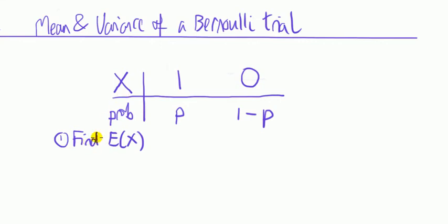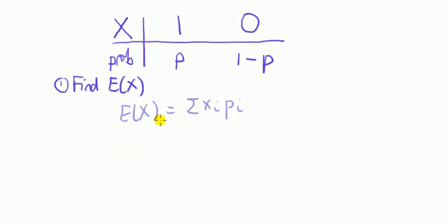First find the mean of X. To find the mean of X is the same as saying find the expected value of X. Now recall the definition of the expected value of X when X is discrete is sum of each outcome times the respective probability. So what we have here is 1 times p plus 0 times 1 minus p and that comes to p.